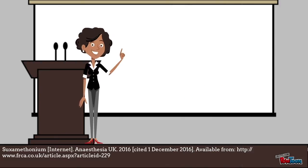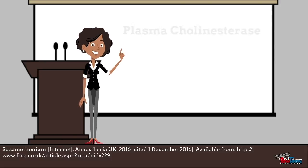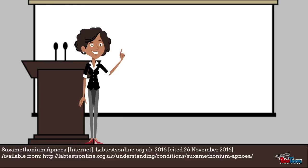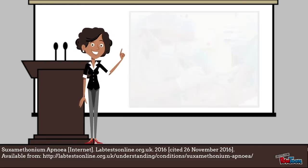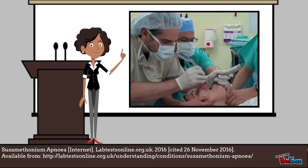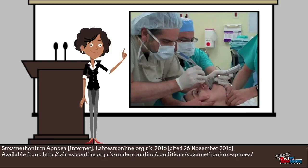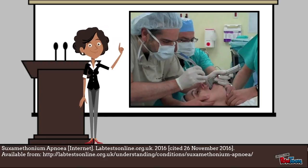Like acetylcholine, succinylcholine is rapidly metabolized in the blood. The enzyme involved in this process is plasma cholinesterase. Succinylcholine is a short-term muscle relaxant with its main uses in surgical procedures where a rapid onset and brief duration of muscle relaxation is needed. It is used as an anesthetic aid in procedures such as endotracheal intubation and electroconvulsive therapy.